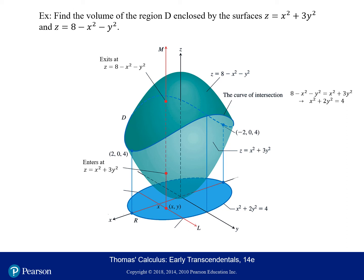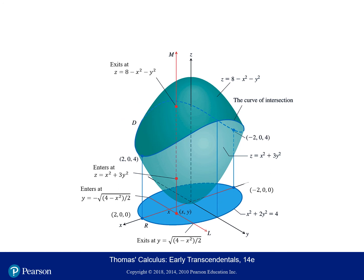For Y, the boundaries are found from the ellipse: we enter at the negative square root and exit at the positive square root of (4 minus X squared) divided by 2. For the X limits, we cover all X values that region R spans, from negative 2 to positive 2. Setting up the triple integral, we place all limits of integration and note there is an invisible 1 as the function being integrated.